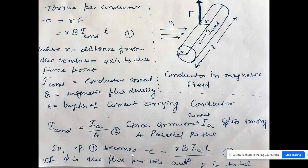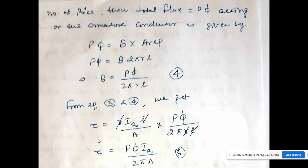Here φ (phi) is the flux per pole. For a multi-pole machine, if P is the total number of poles, the total flux is P·φ, acting on the armature. Since flux equals magnetic flux density multiplied by area, we substitute the value of B into equation three, giving the torque per conductor as: T = (P·φ·I) / A, where P is the number of poles, φ is flux per pole, I is armature current, and A is parallel paths.